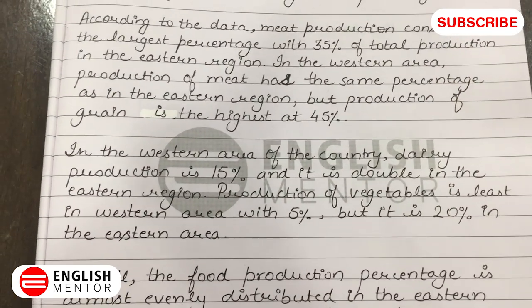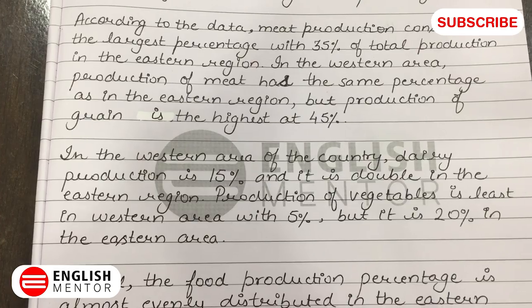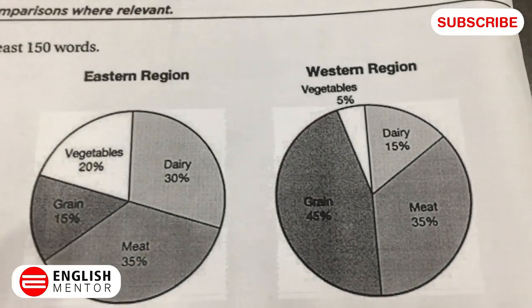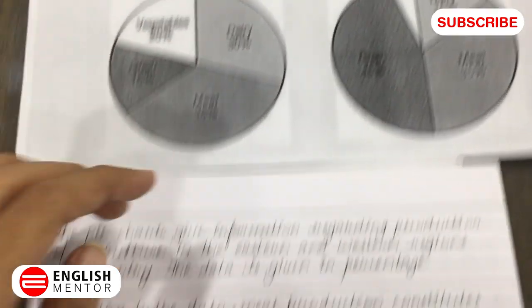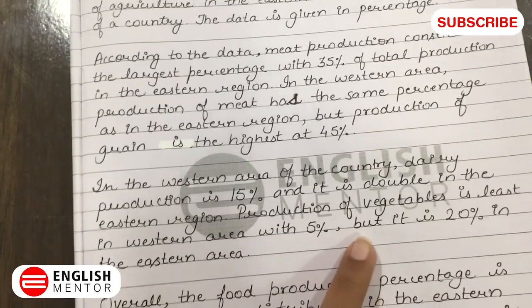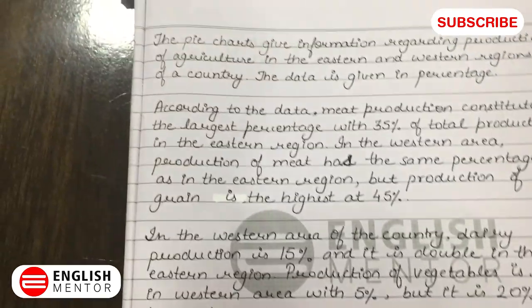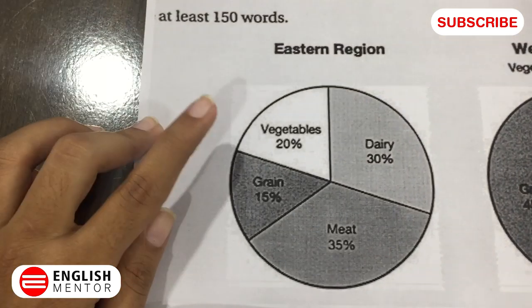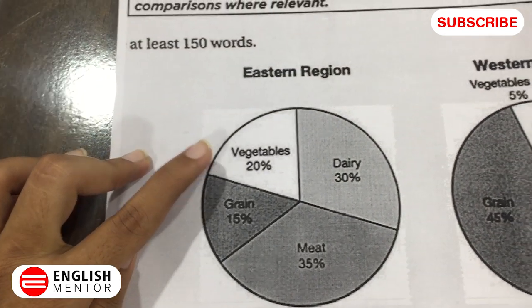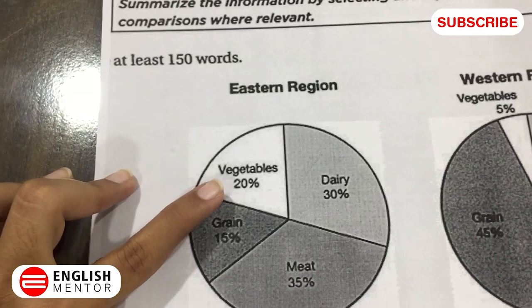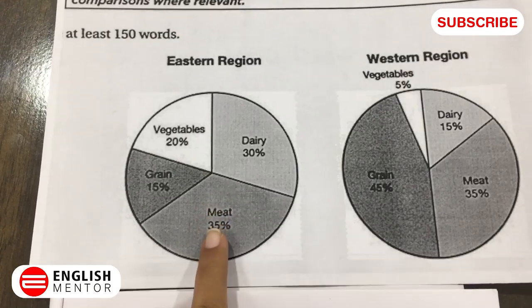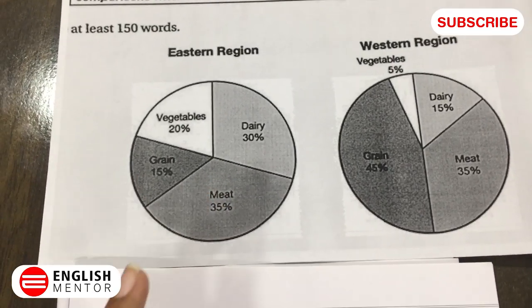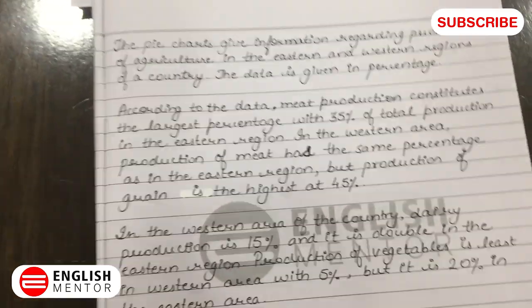Production of vegetables is the least in the western area at 5%. In the western area, the least percentage is for vegetables at 5%, but it is 20% in the eastern area. We are now comparing these two pie charts and accumulating the information in the given task.